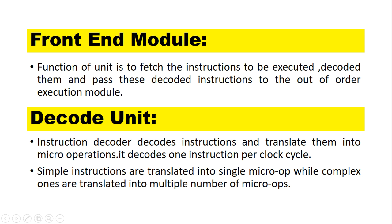The Decoding Unit's Instruction Decoder decodes instructions and translates them into micro-operations. It decodes one instruction per clock cycle. Simple instructions are translated into a single micro-op, while complex ones are translated into multiple micro-ops.